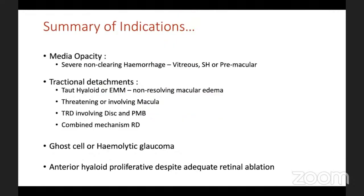Before jumping into the cases, let me go through the summary of indications. Diabetic vitrectomy is indicated in media opacity, severe non-clearing vitreous hemorrhage — whether vitreous, sub-hyaloid, or premacular. Tractional components including a tight hyaloid or ERM causing non-resolving macular edema despite anti-VEGF and laser, TRD threatening or involving the macula, disc or papillomacular bundle, combined tractional-rhegmatogenous detachments, ghost cell or hemolytic glaucoma unresponsive to medications, and anti-VEGF-refractory proliferation despite adequate laser or cryo ablation.